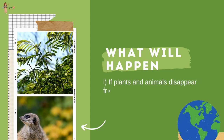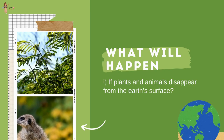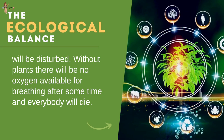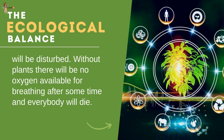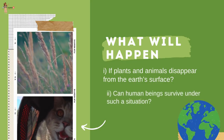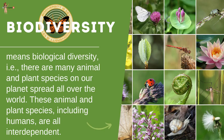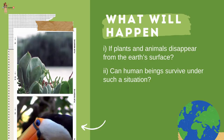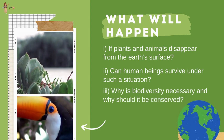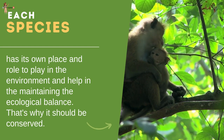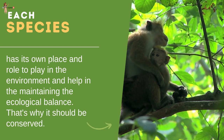If plants and animals disappear from the earth's surface, the ecological balance will be disturbed — without plants there will be no oxygen for breathing and all life will die. Biodiversity means biological diversity, meaning there are many animal and plant species on our planet, all of which including humans are interdependent. Each species has its own place and role to play in the environment and helps maintain ecological balance — that is why biodiversity should be conserved.